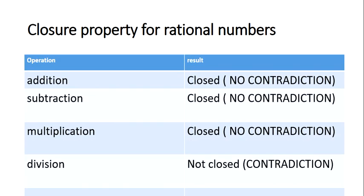So as a final result, just like integers, rational numbers also follow the same closure property: they are closed under addition, subtraction, and multiplication, but they are not closed under division. If you add two rational numbers you get a rational number; subtract two rational numbers you always get a rational number; multiply two rational numbers you always get a rational number. But if you divide two rational numbers there is no guarantee — you may get 'not defined' as an answer. This is the contradiction due to which rational numbers are not closed under division. Thank you very much for patiently listening; we will discuss other properties of rational numbers in the next video.